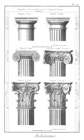The composite order is a mixed order, combining the volutes of the Ionic order capital with the acanthus leaves of the Corinthian order. In many versions the composite order volutes are larger, however, and there is generally some ornament placed centrally between the volutes. The column of the composite order is typically ten diameters high, though as with all the orders these details may be adjusted by the architect for particular buildings.